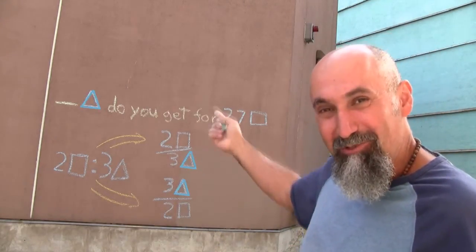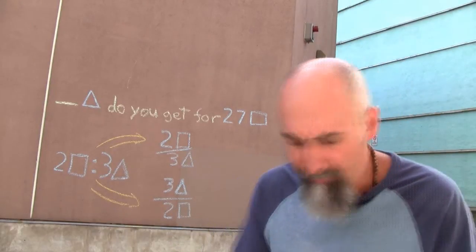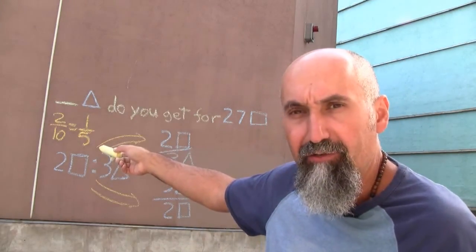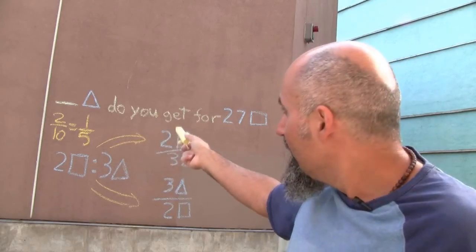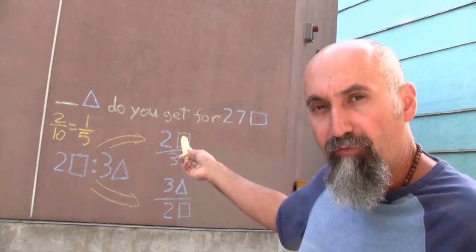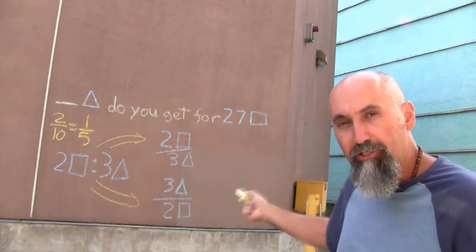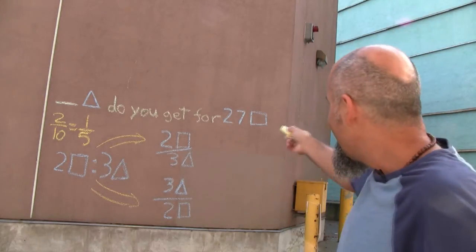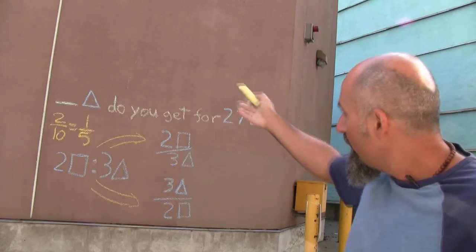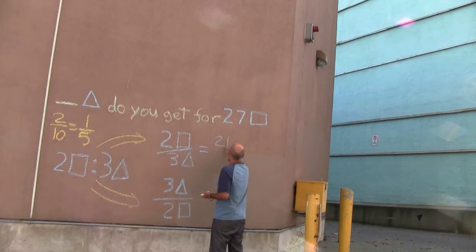The blue triangles are the same as the blue triangles here, and the blue squares are the same as the blue squares here. Think of it like the fraction 2 over 10, which reduces to 1 over 5 — those two ratios are proportional. So we're going to say that two blue squares over three blue triangles equals 27 blue squares over the number of triangles we're looking for.